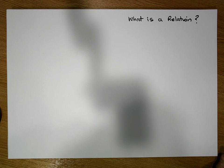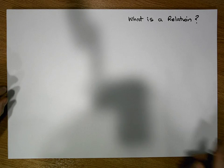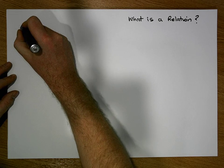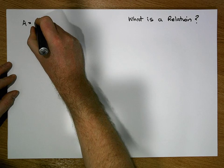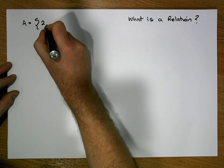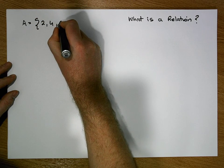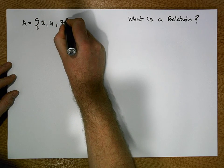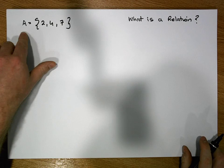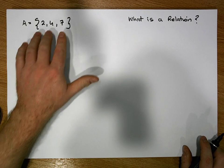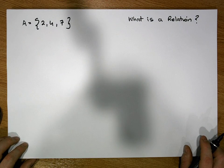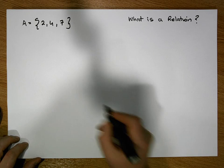Let's consider a particular set. Let's say A is the set that contains the values two, four, and seven. So A is of size three — just three elements in that set: two, four, and seven.